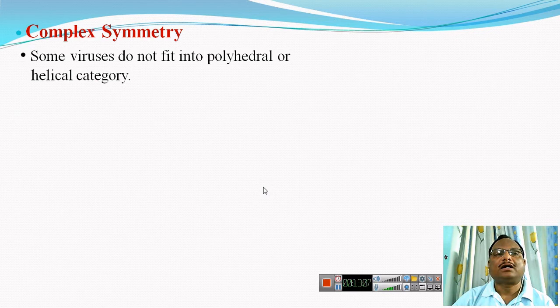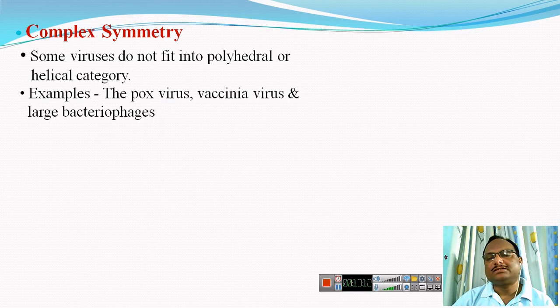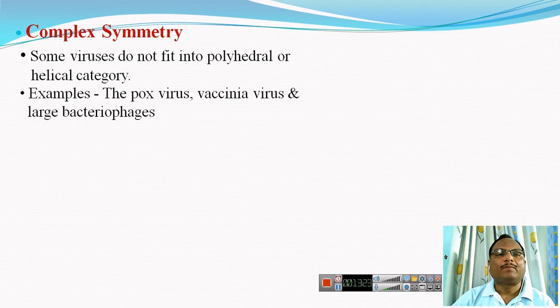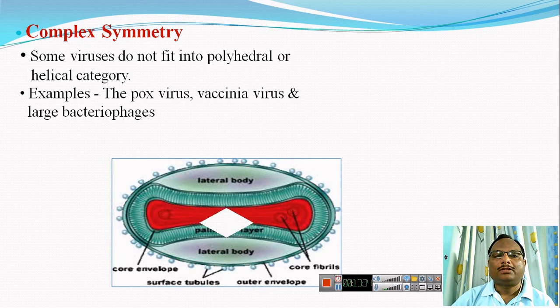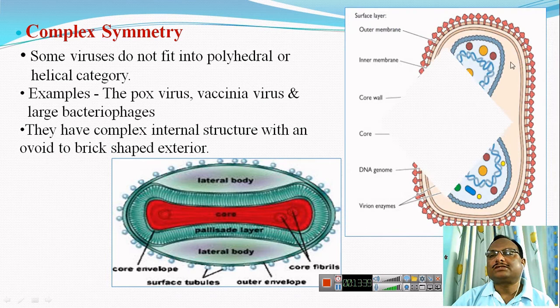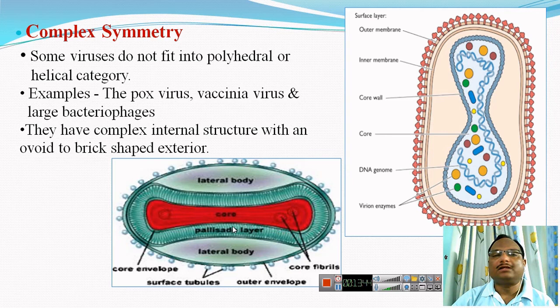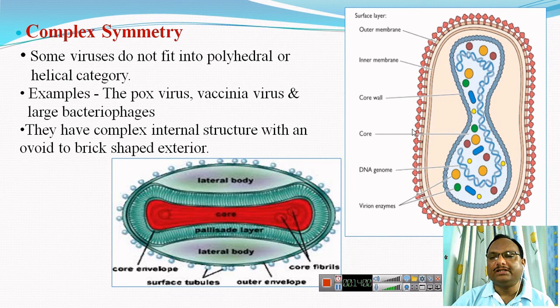The third type comprises viruses with complex structure or complex symmetry. Some viruses do not fall into either polyhedral or helical symmetry — they are neither helical nor spherical, but structurally complex. Examples include pox virus, vaccinia virus, and many bacteriophages. Both pox virus and vaccinia virus have complex internal structures with an oval-to-brick-shaped exterior, making them neither spherical nor rod-shaped but structurally complex.